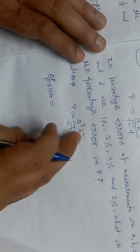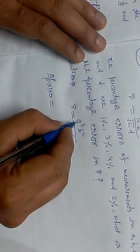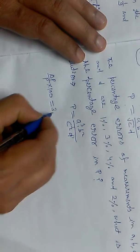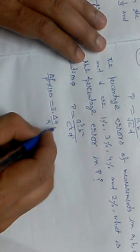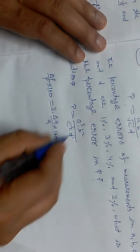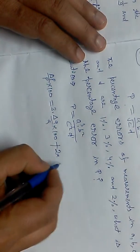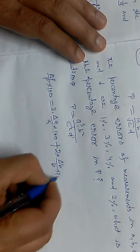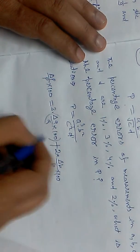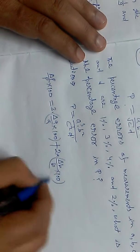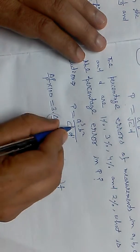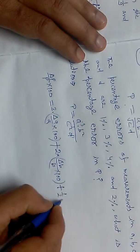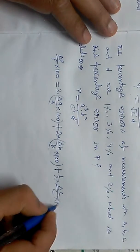For quantity a with power 3, we get 3 times delta a upon a times 100. For b with power 2, we get 2 times delta b upon b times 100. For c with power one-half, we get one-half times delta c upon c times 100, plus one-half times delta d upon d times 100.